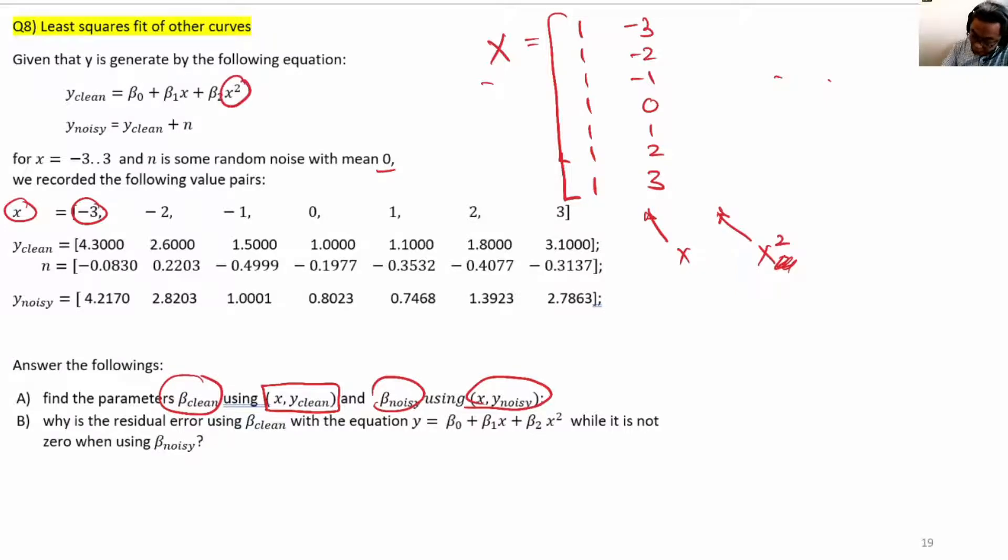For the x squared column, you'll have minus three times minus three, which is plus nine, minus two times minus two is four, then one, zero, one, four, and nine.